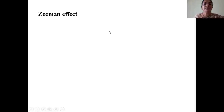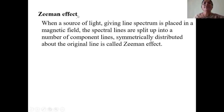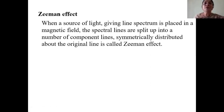Now let us see what is Zeeman effect. When a source of light giving line spectrum is placed in a magnetic field, the spectral lines are split up into a number of component lines symmetrically distributed about the original line — this is called Zeeman effect. Zeeman chose the spectrometer with high resolving power, and also chose a light source that is giving out line spectrum.